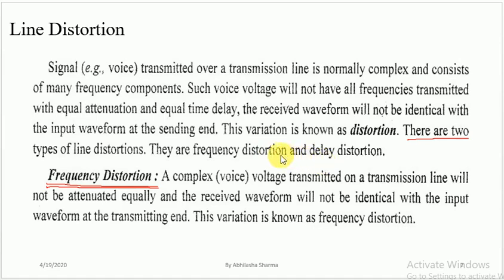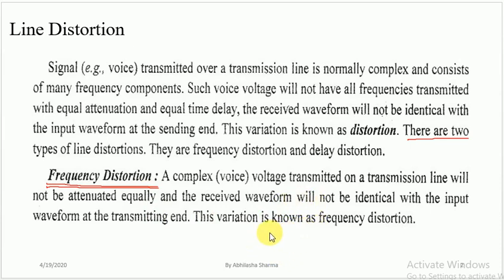We will discuss one by one what is meant by frequency distortion and delay distortion. Frequency distortion: a complex voltage transmitted on a transmission line will not be attenuated equally, and the received waveform will not be identical with the input waveform at the transmitting end. This variation is known as frequency distortion. It means due to the attenuation parameter, the frequency distortion occurs.